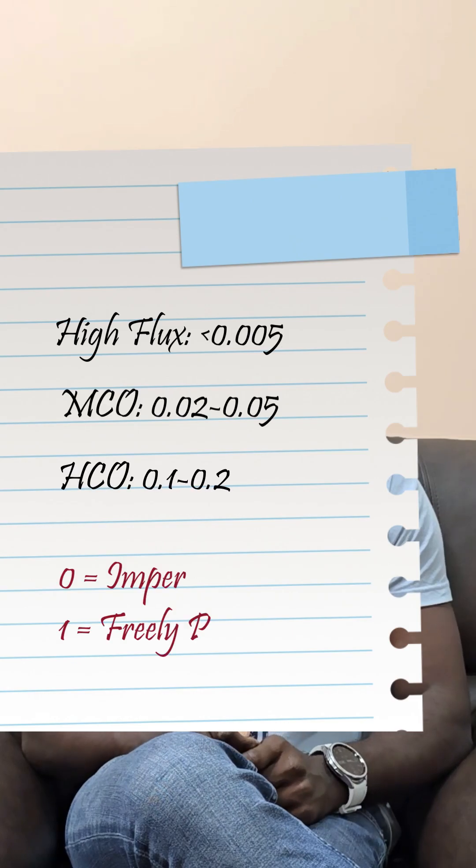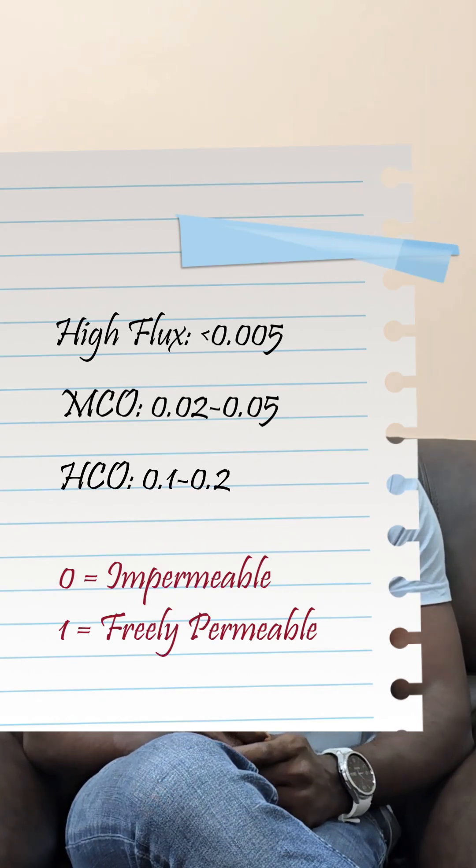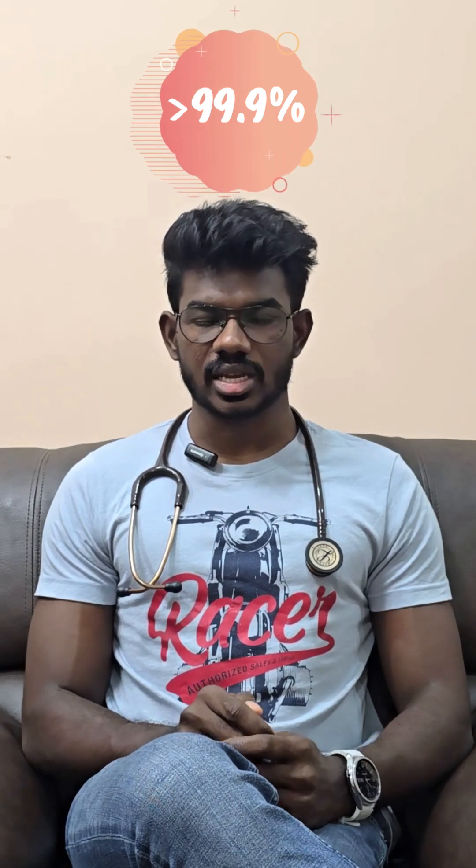This is why albumin has a very low sieving coefficient. So in routine dialysis, albumin retention is more than 99.9% — meaning your albumin stays exactly where your body needs it, and not in the dialysate.